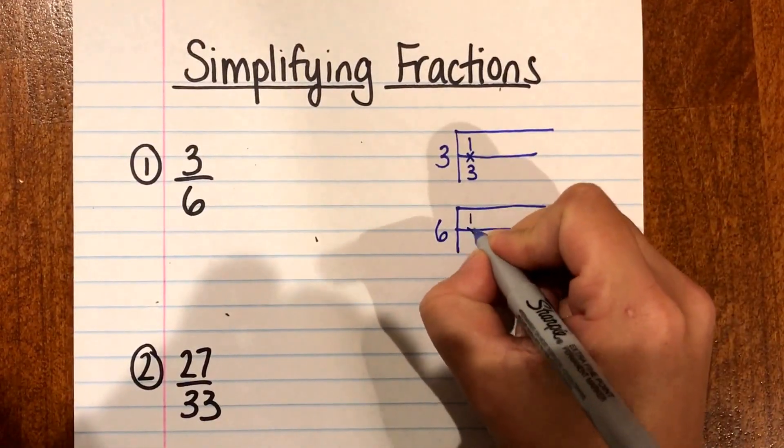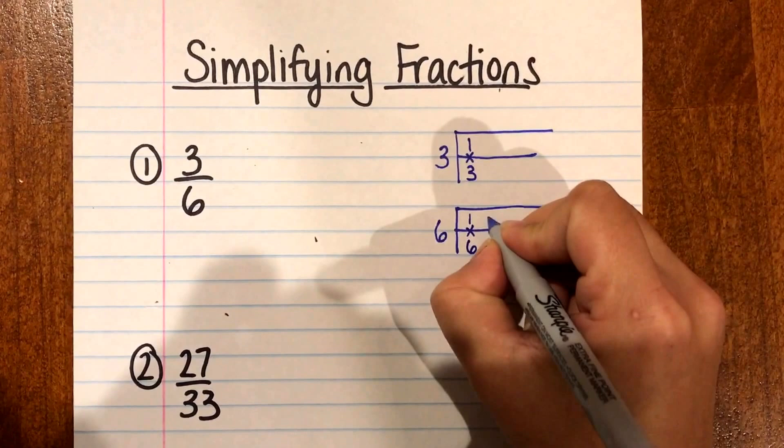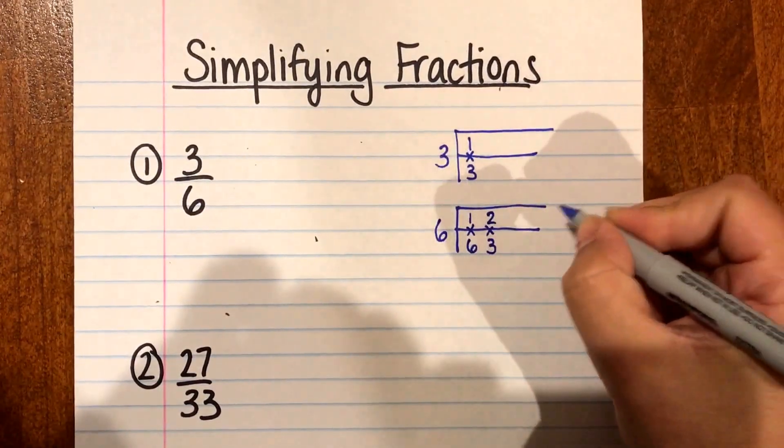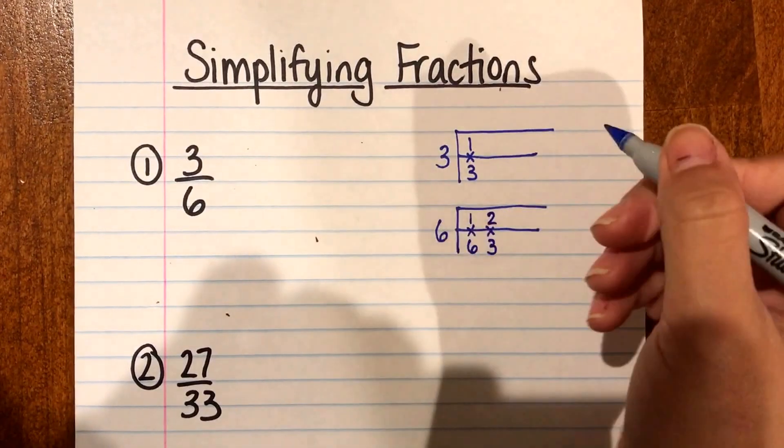So then I'm gonna go to 6. 1 times 6 is 6. Go to 2. 2 times 3 is 6 and then I can go up to 3 but I already have a 3 so I'm gonna stop again.